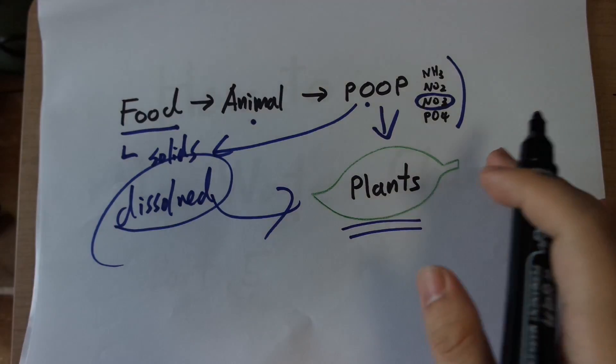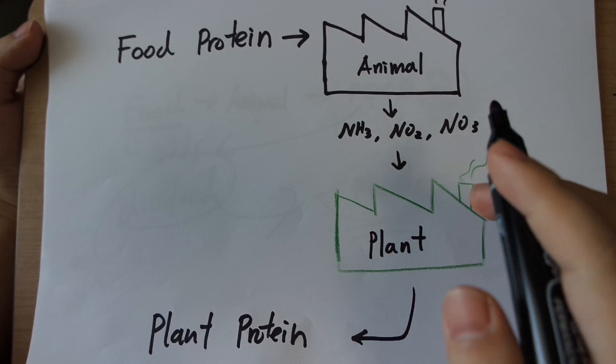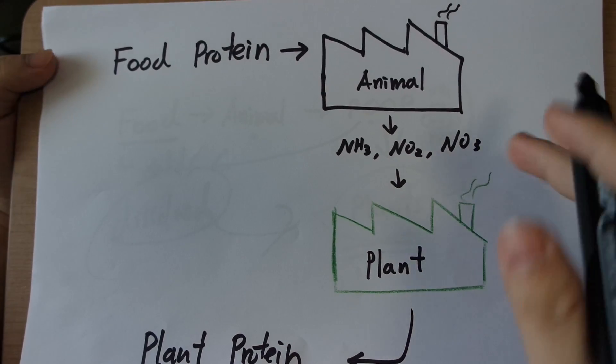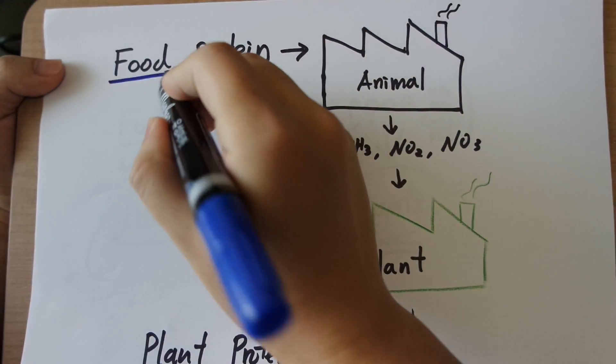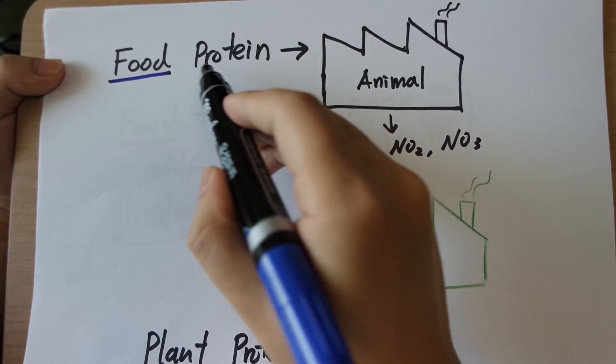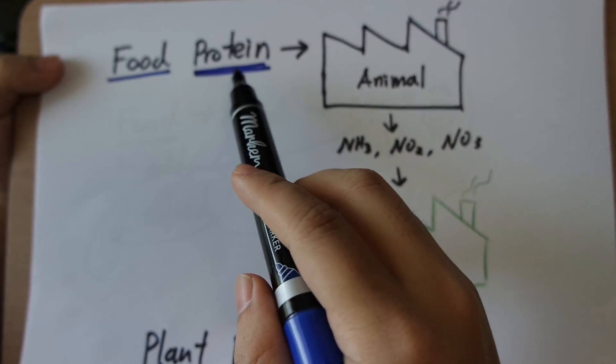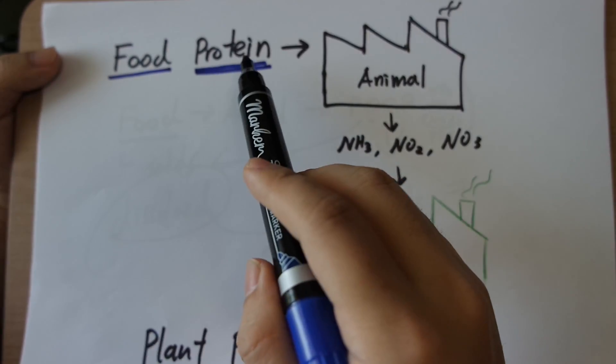So how do plants do that? Let's just follow the nitrogen because the nitrogen is the most critical factor here. It is the food that contains nitrogen and it is specifically the protein that contains nitrogen. That's because amino acids have nitrogen in them. So the food protein is the source of the nitrogen.